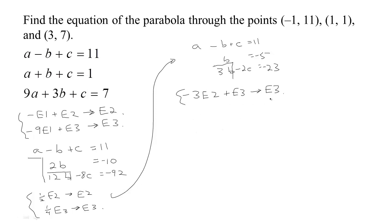The only equation we're changing now is equation three. Taking negative three times equation two and adding to equation three: negative 3b plus 3b gives no b's, negative three times zero gives negative 2c, and negative three times negative five is fifteen, and fifteen plus negative twenty-three is negative eight. So we have negative 2c equals negative 8.